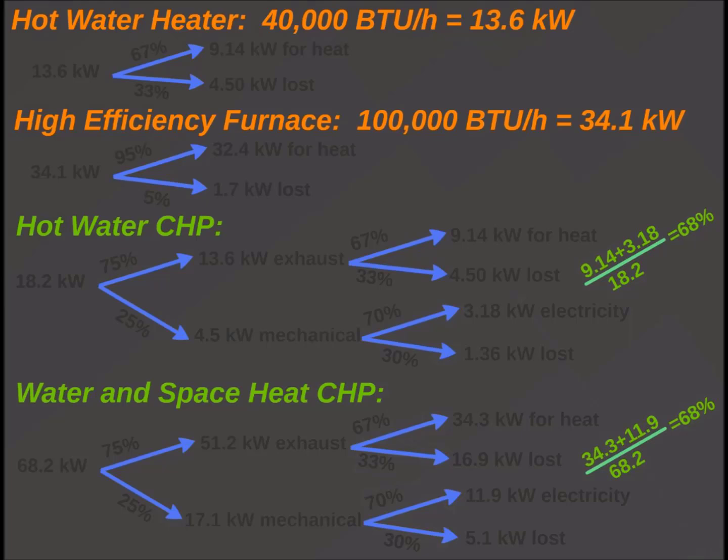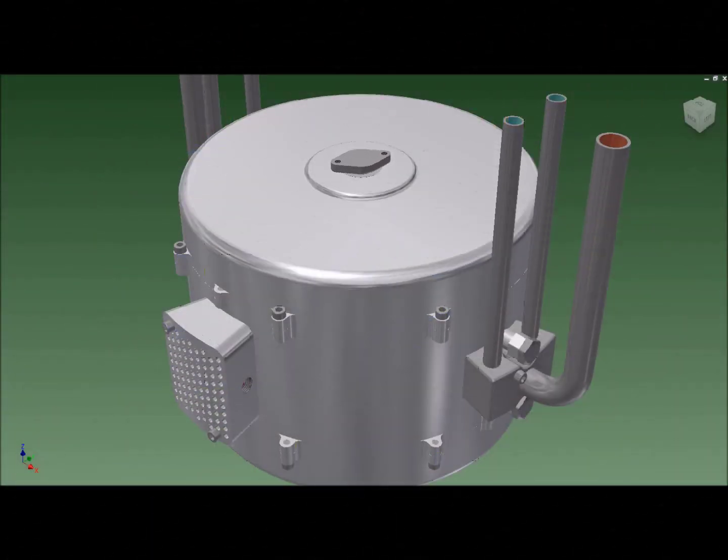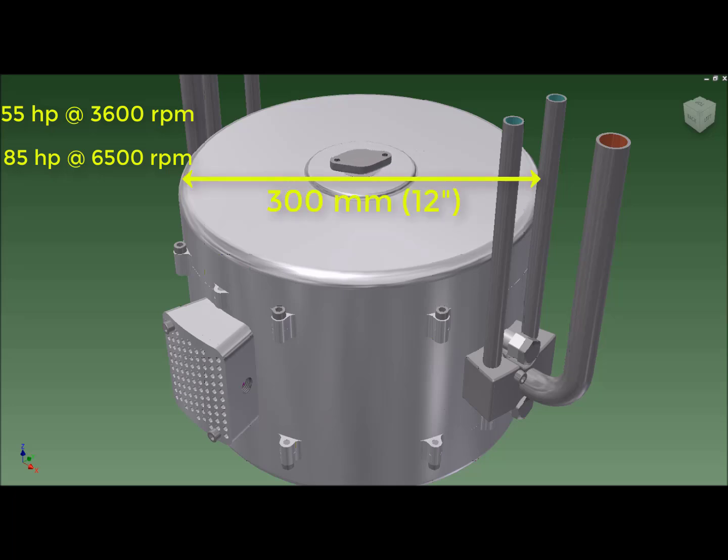The current design is predicted to produce over 55 horsepower at 3600 rpm and approximately 85 horsepower at 6500 rpm. Given that it is 300 millimeters in diameter and less than 250 millimeters tall with a mass under 40 kilograms, this engine promises to be a powerful yet compact, quiet, vibration-free device.